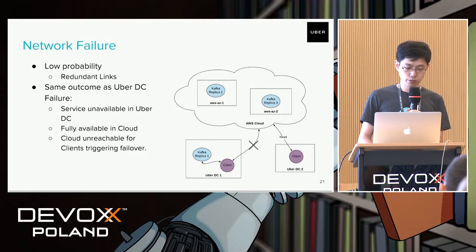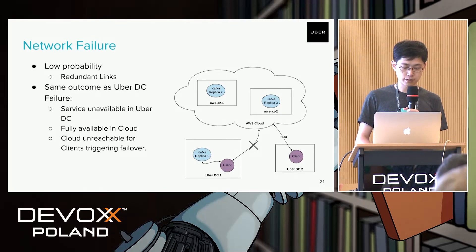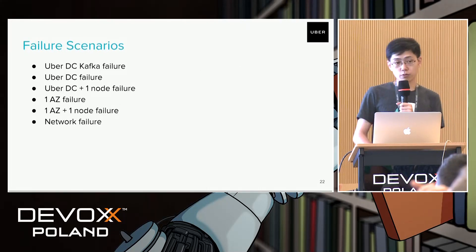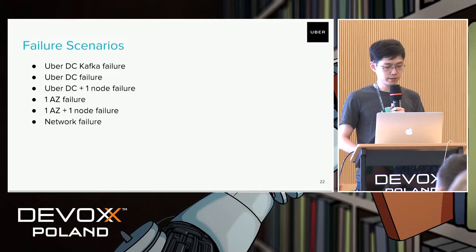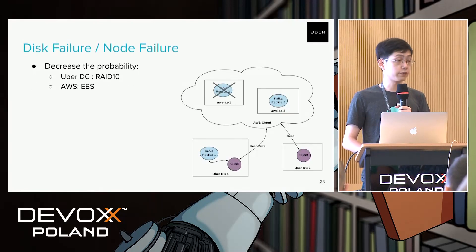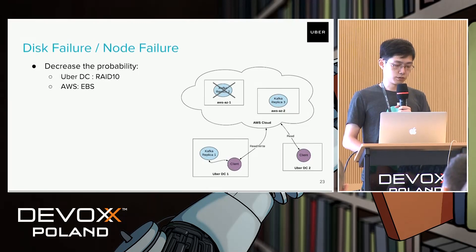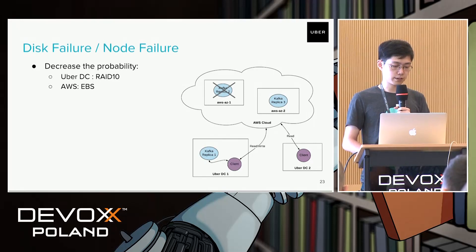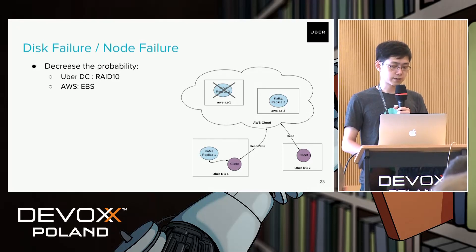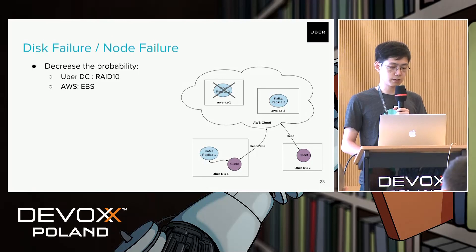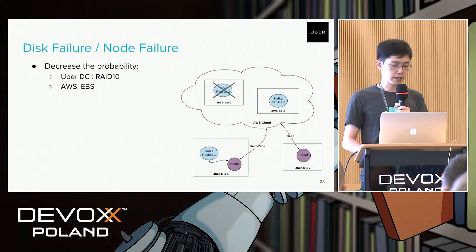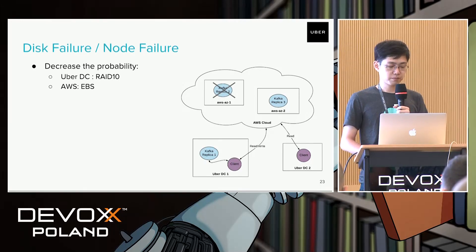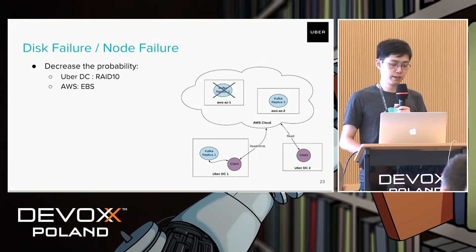To mitigate network failure we normally trigger failover to another Uber data center. Most failure scenarios come from disk failure or node failure. To decrease the probability of such failures in our own Uber data center we use RAID 10 to mirror data, and in AWS we use EBS with redundancy to improve availability.